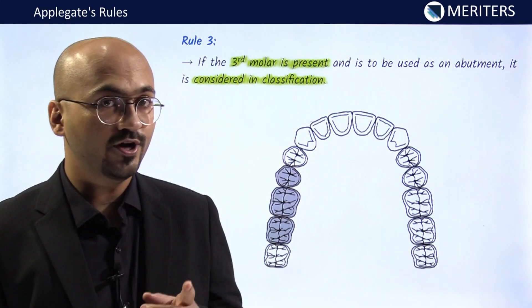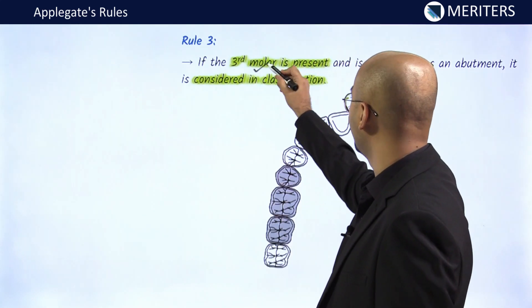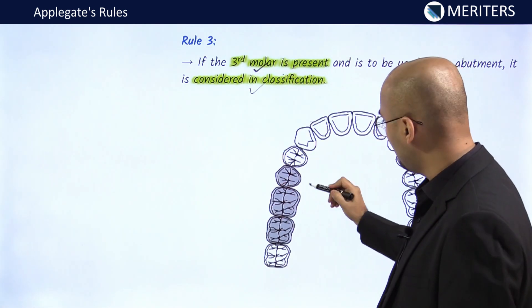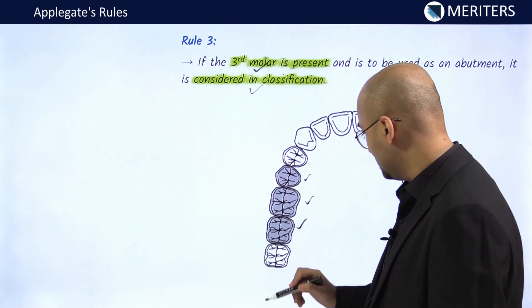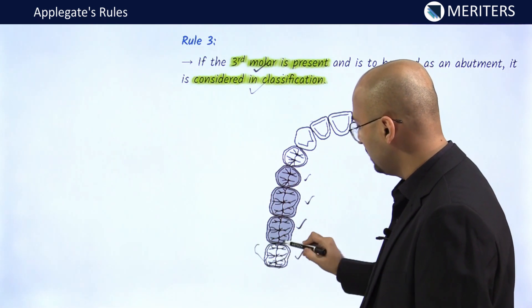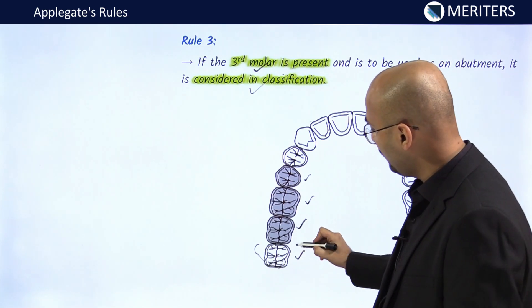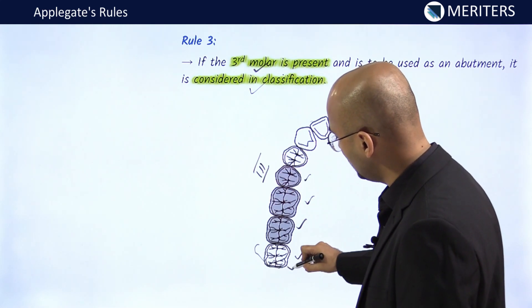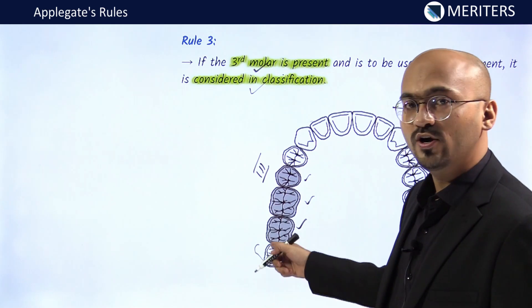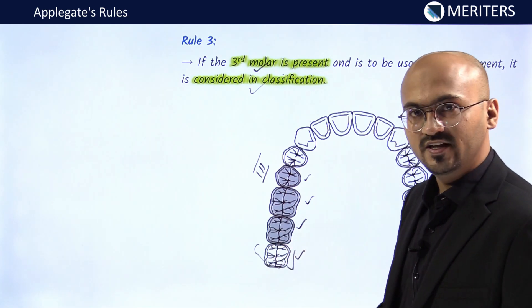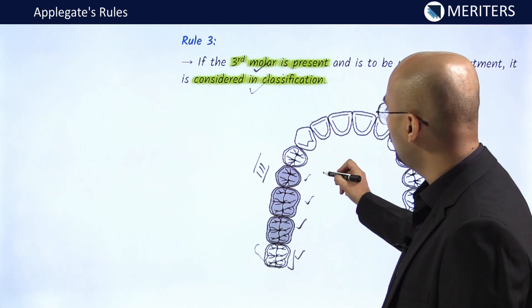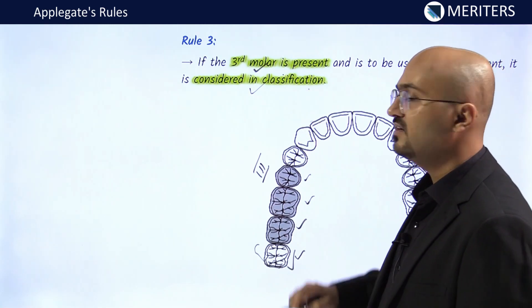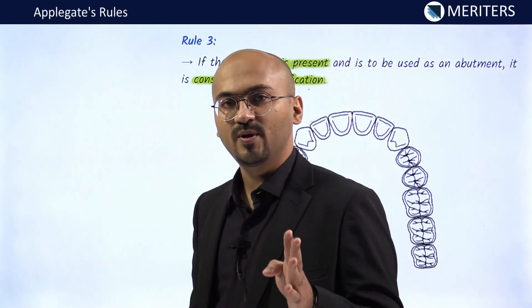Applegate's Rule Number 3: if the third molar is present and used as an abutment, it should be considered in the classification. For example, if the second premolar, first molar, and second molar are missing but the third molar is a healthy tooth used as an abutment, this becomes Kennedy's Class 3. If the third molar is not available — partially erupted, impacted, or unavailable — it would become Kennedy's Class 2.